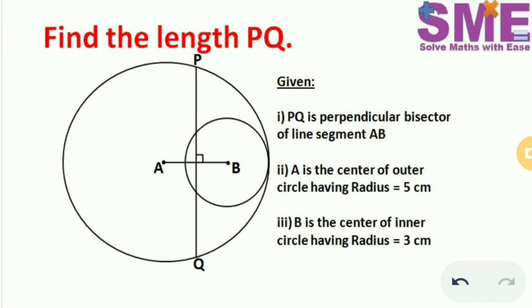we have two circles, one outer circle and one inner circle, and these two circles touch at a point. A is the center of the outer circle having radius 5 cm and B is the center of the inner circle having radius 3 cm.